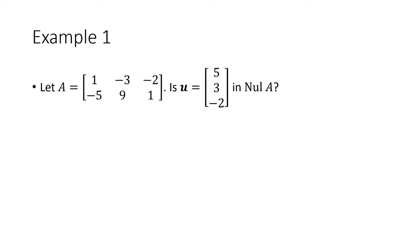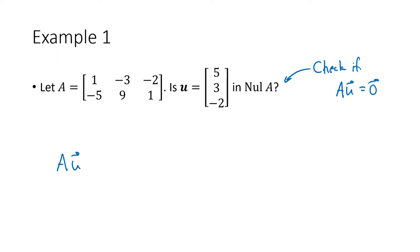Let's practice with this definition a little bit. Here's a matrix A and a vector U. Is that vector U in the null space of A? That's actually a pretty easy question to answer because all we have to do is check whether A times U equals zero. If the answer is yes, then yes, the vector is in the null space. If A times U turns out to not be the zero vector, then that vector is not in the null space.